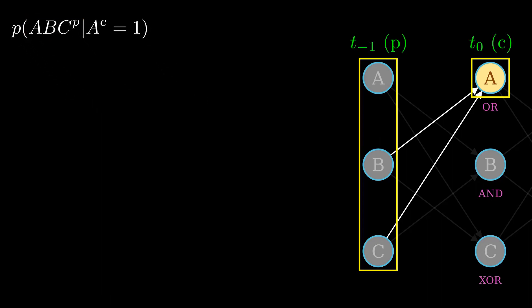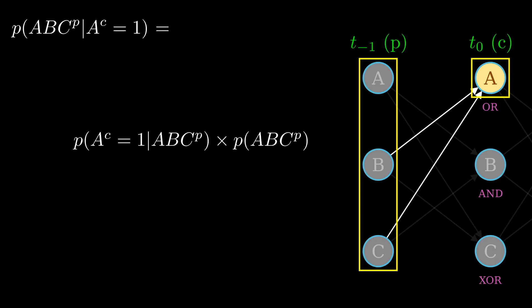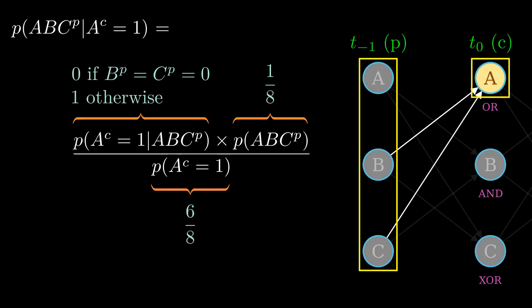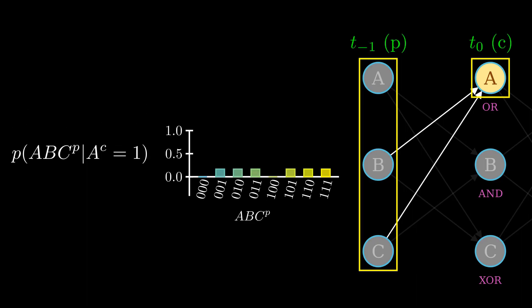The probability of a particular past state given that current A equals 1 is the probability that current A is 1 given the past state, times the probability of the past state, divided by the probability of current A being 1. For the probability of the past state, the value will be 1 over 8 in all cases, because we are assuming uniform distribution. Similarly, the probability of current A being 1 is 6 over 8, since out of the 8 possible states of the system, 6 of them have A equals 1. Finally, for the conditional probability, we use the fact that A is the logical gate OR. So the probability of current A being 1 given the past state will be 0 if both past B and past C are 0, and it will be 1 otherwise.